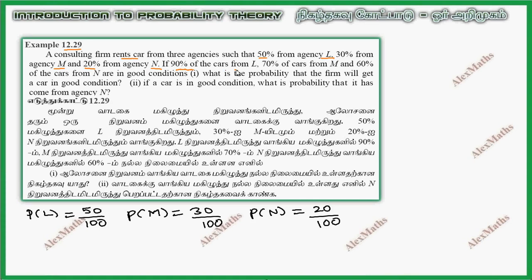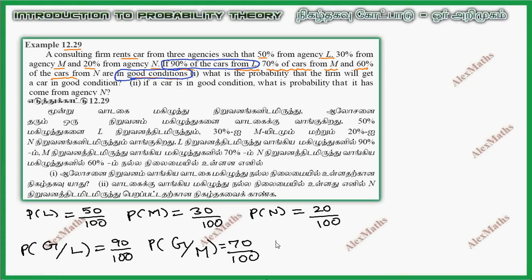Further, 90% of the cars from L, 70% of the cars from M, and 60% of the cars from N are in good condition. That is P of G given L equals 90 by 100, P of G given M equals 70 by 100, P of G given N equals 60 by 100.